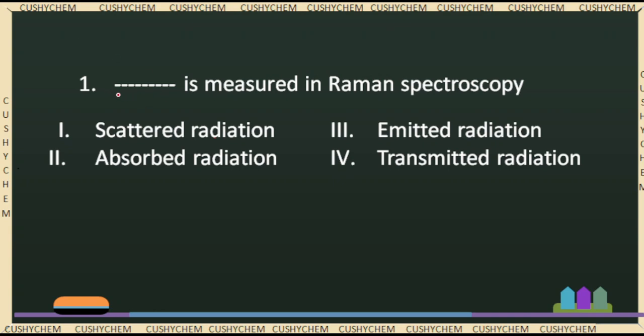The first question is a very direct question. JLK information is very easy, a very straight question. Dash is measured in Raman Spectroscopy. C.V. Raman is an Indian scientist. The right answer is scattered radiation. In the case of Raman Spectroscopy, we measure scattered radiation. So this is the right answer: scattered radiation.